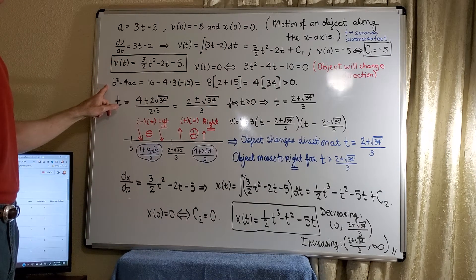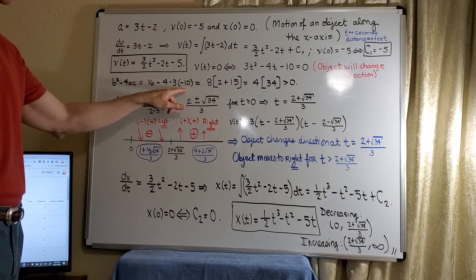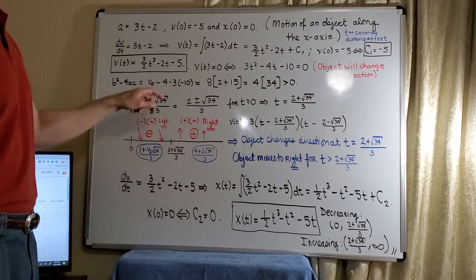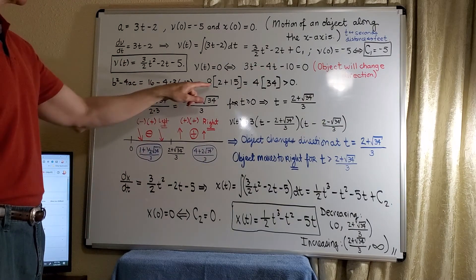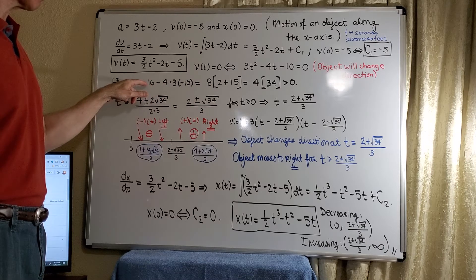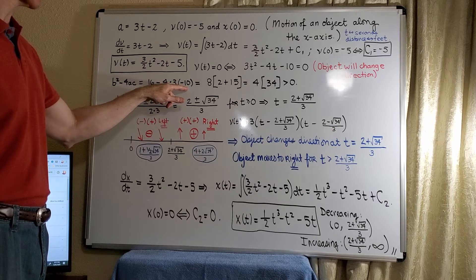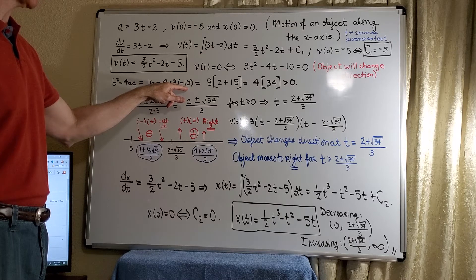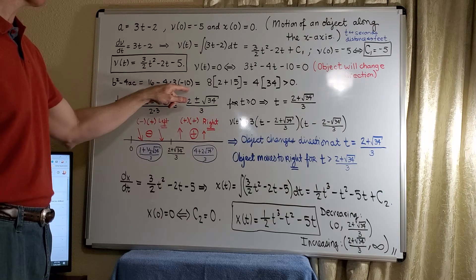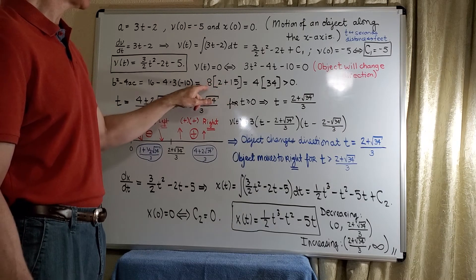If you compute the discriminant, we'll get 16 minus 4 times 3 times the negative 10 as we get from here. The negatives will absorb to give us a plus. And I want to go ahead and factor out an 8 from the 16 here. There's an 8 here because there's a 2 in the negative 10. So that's going to leave behind a 2 from the 16 and a 15 from this term to give us 8 times 17.